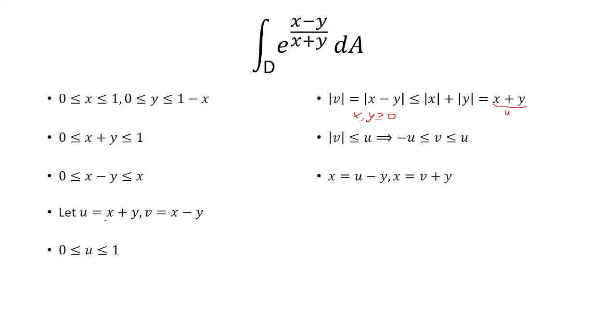Now, here we have u and v. We solve for x and y. x is equal to u minus y, and x is equal to v plus y. So we solve for x first. And then, there's some substituting, or actually some elimination, and solve for x and y in terms of u and v. And then from there, we did the Jacobian.